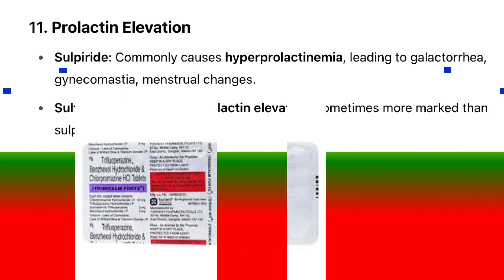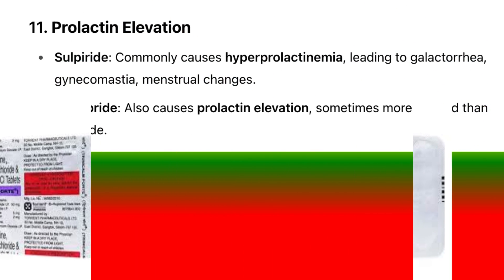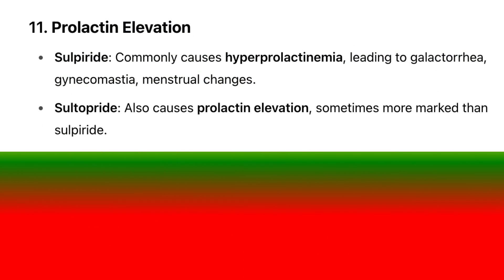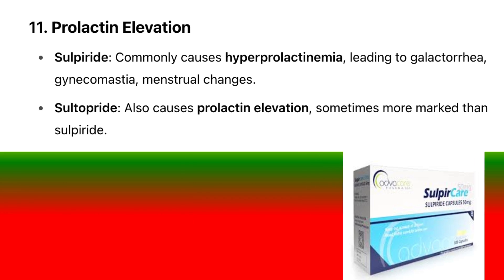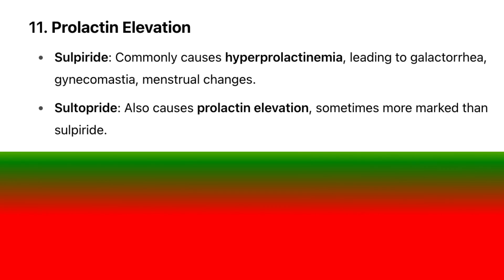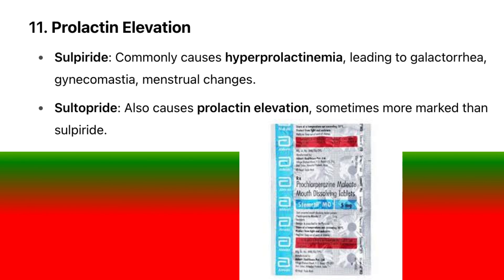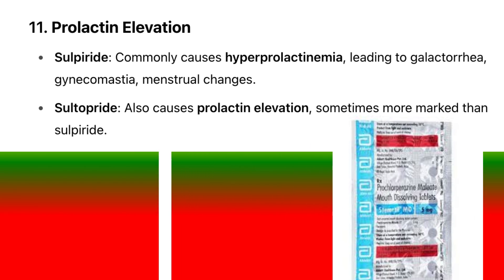11. Prolactin elevation: Sulpiride commonly causes hyperprolactinemia, leading to galactorrhea, gynecomastia, and menstrual changes. Sultopride also causes prolactin elevation, sometimes more marked than Sulpiride.